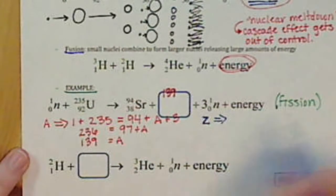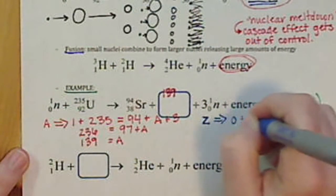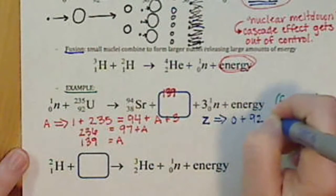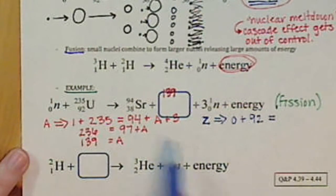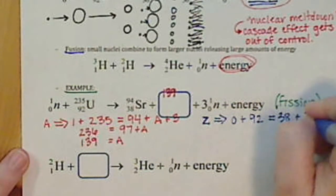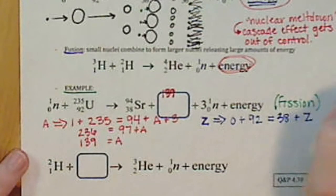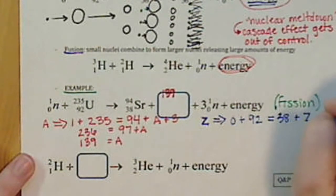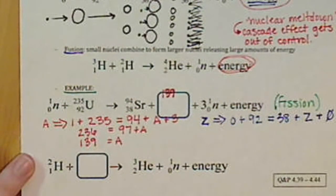So we have 0 + 92 and that equals 38 plus our atomic number plus three times zero, which is just zero.